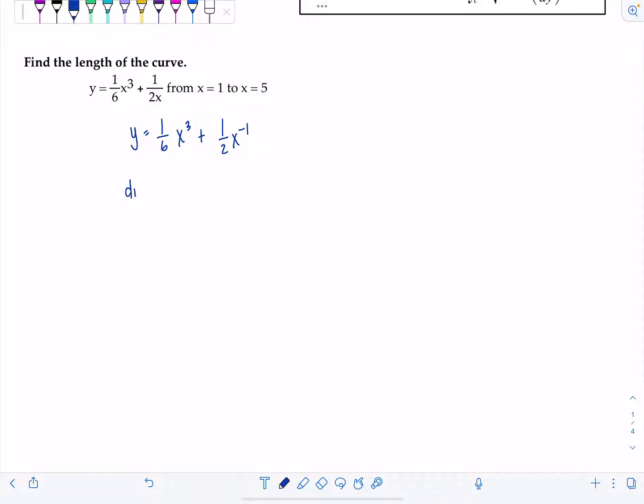Now it's derivative time. So dy/dx, one sixth I'm going to bring the three down. Now I have x squared plus one half times negative one times x to the negative second. So now we're left with one half x squared minus one over two x squared. That's our derivative, that's dy/dx. That's not what we integrate.